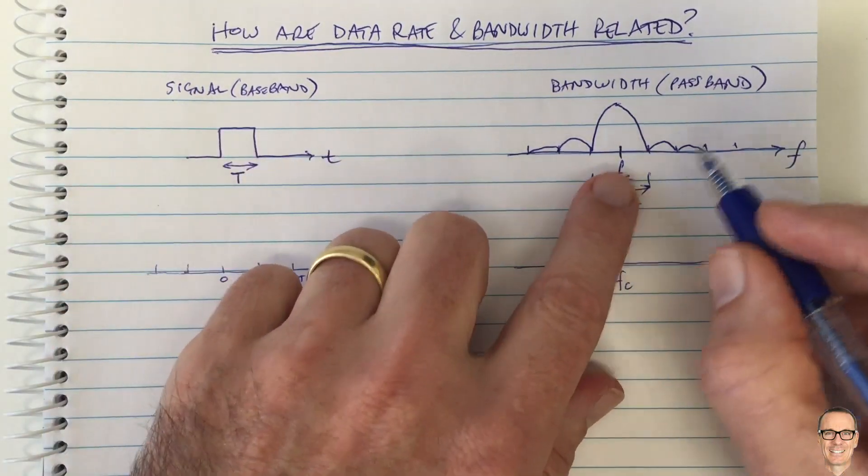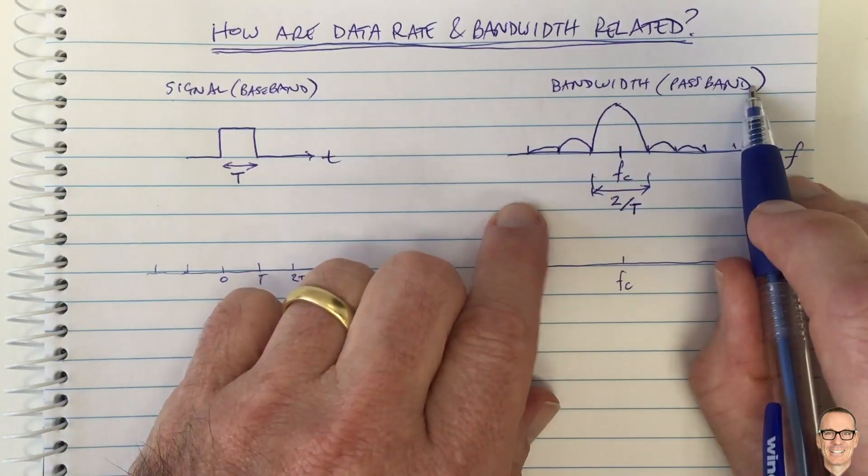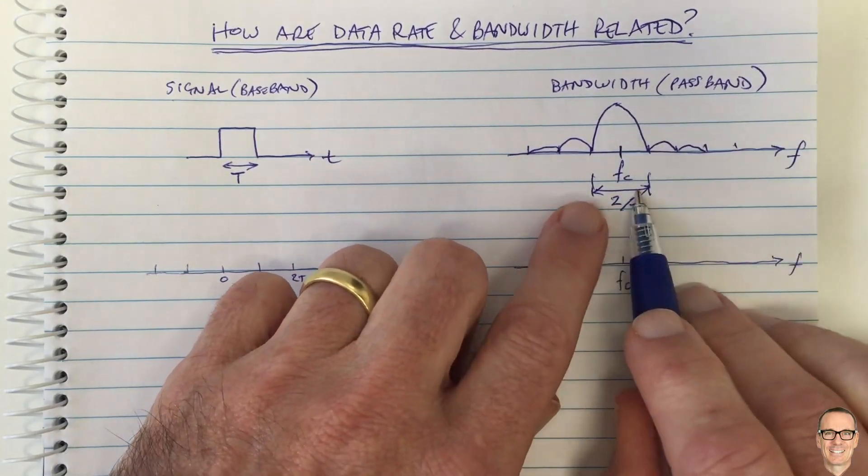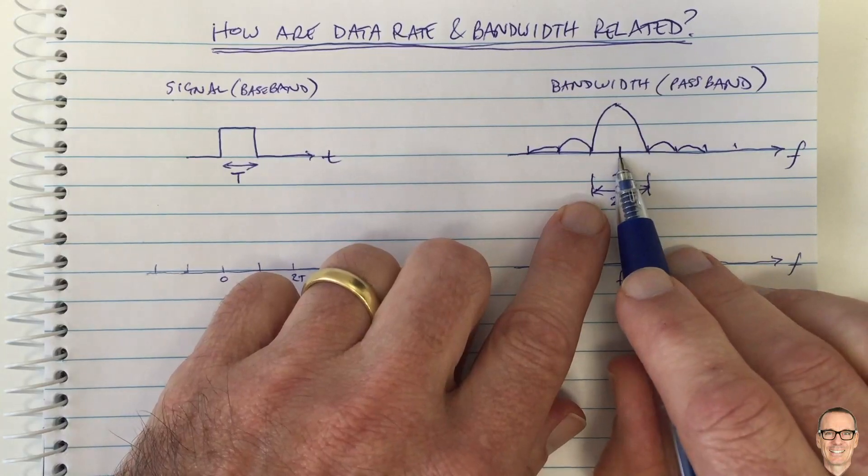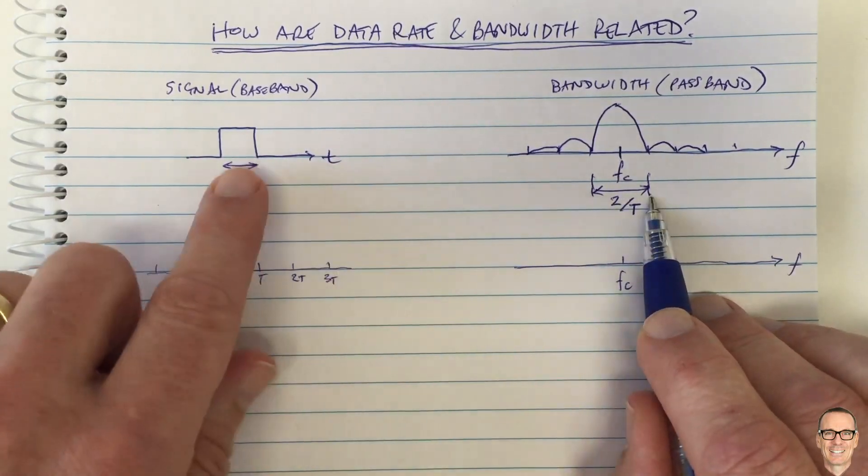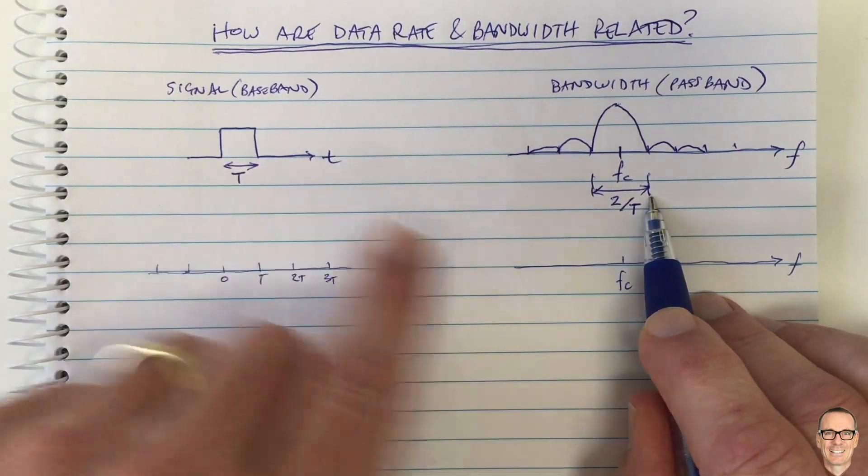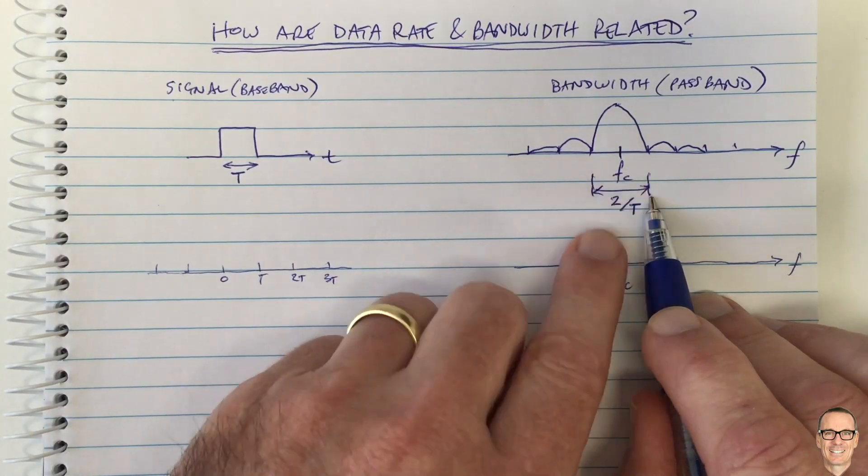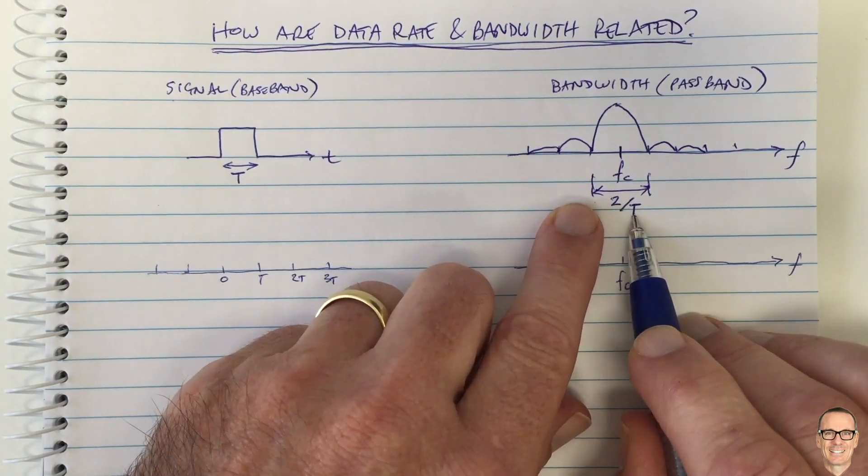I'm drawing here the passband and indicating what the bandwidth is that you need either side of that carrier frequency if you are to transmit this signal at that carrier frequency. That bandwidth is 2 divided by capital T.